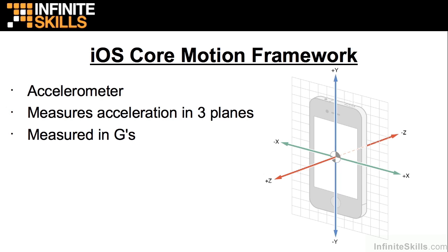If you lay a phone flat on a table and look at the accelerometer readings, you'll see that the Z axis will give you a reading of about one, and it's measured in Gs, which are the Earth's gravitational force. So what it's saying with that one reading for the Z axis is that there's one gravitational force being applied to the phone, which makes sense because gravity is holding the phone down to the desk that you've laid it on.